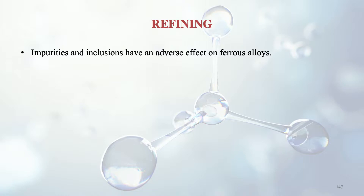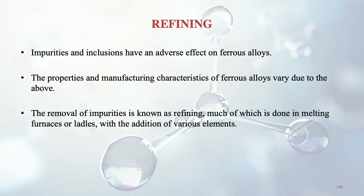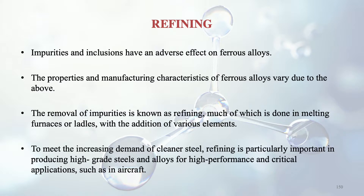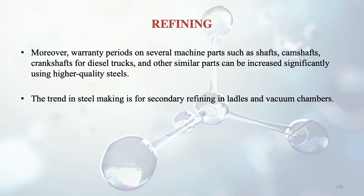Since impurities and inclusions cause an adverse effect on ferrous alloys, refining needs to be done. The properties and manufacturing characteristics of ferrous alloys vary due to these impurities. The removal of impurities is known as refining, much of which is done in melting furnaces or ladles with addition of various elements. Refining is particularly important in producing high-grade steels and alloys for high-performance and critical applications such as in aircraft, and can also increase warranty periods on machine parts like shafts, camshafts and crankshafts for diesel trucks.